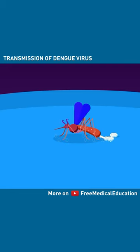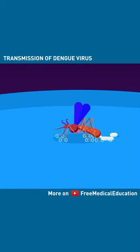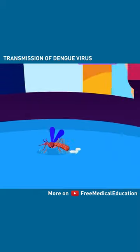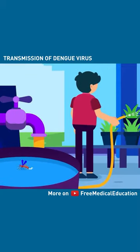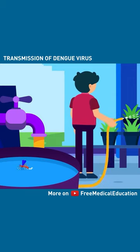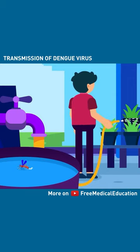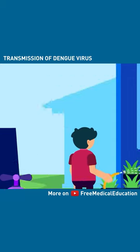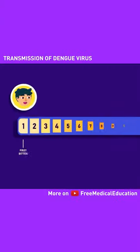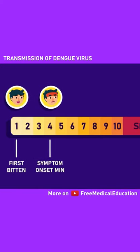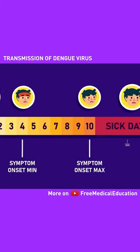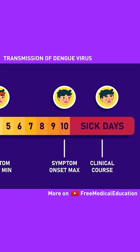These mosquitoes can typically be found laying eggs near standing water in containers that hold water, like buckets, bowls, animal dishes, and others. The incubation period of dengue is 4 to 10 days once the mosquito has bitten the individual.